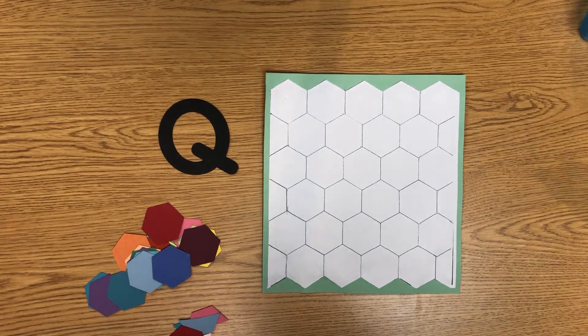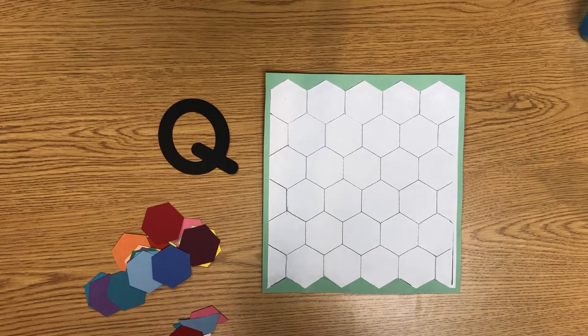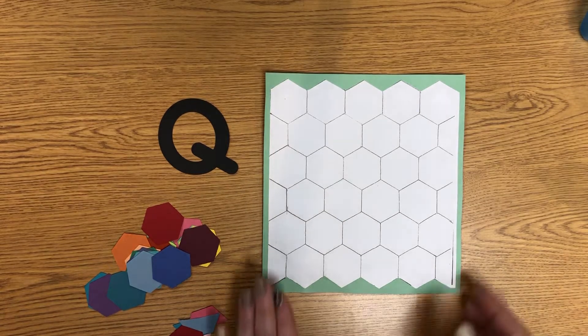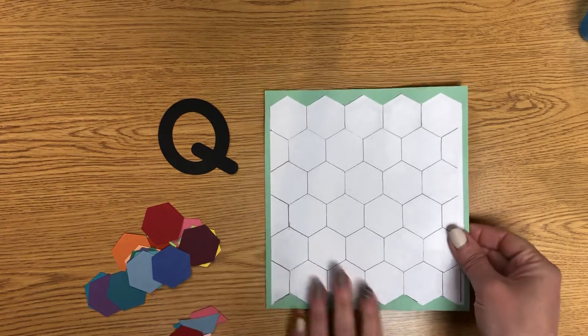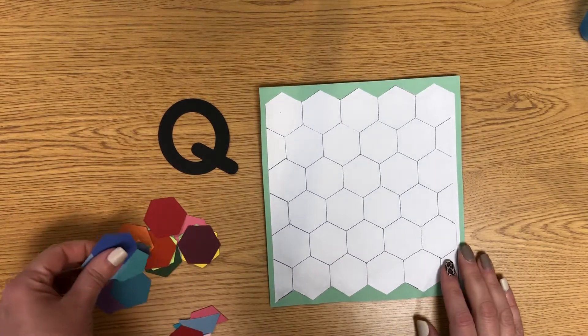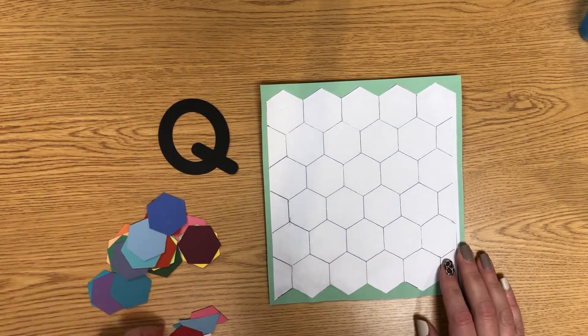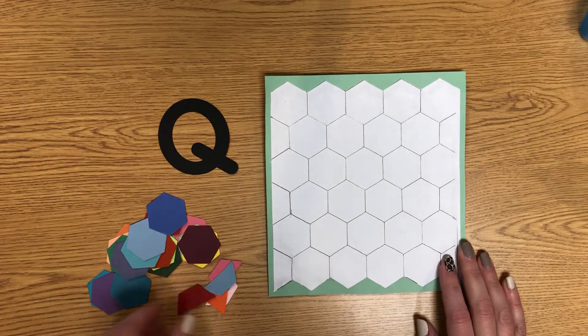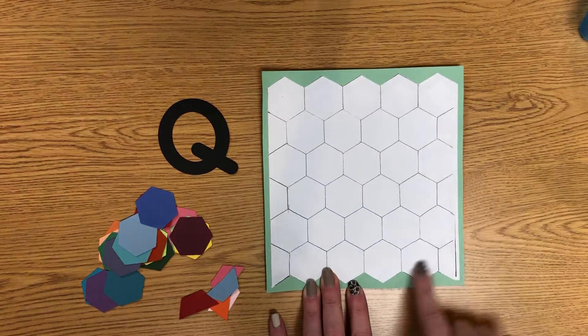This is our pre-kindergarten letter Q quilt craft. In your papers you will have the base of your quilt, and then you will have a bunch of punched out hexagon shapes and some half hexagons.